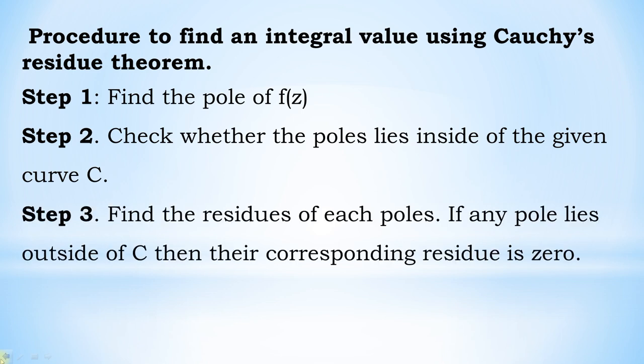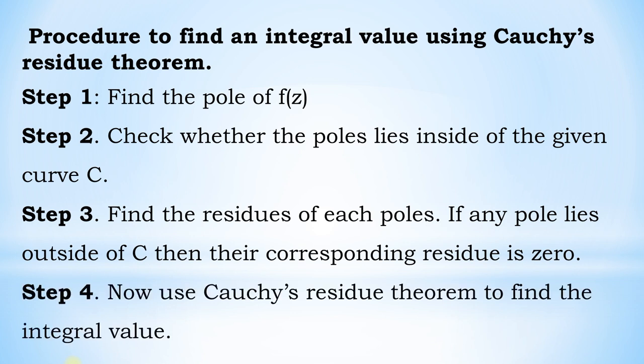Step 3: find the residues at each pole. If any pole lies outside of C, then its corresponding residue is 0. Step 4: now use Cauchy's residue theorem to find the integral value.